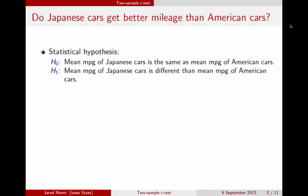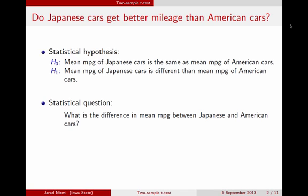The first is to phrase it as a hypothesis test, where the null hypothesis is that the mean miles per gallon in these two groups — Japanese and American — are the same, and the alternative is that they're different. The second way we can phrase the question is as an estimation question: what is the difference in mean miles per gallon between Japanese and American cars?